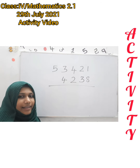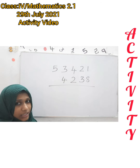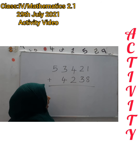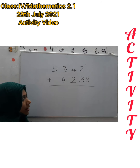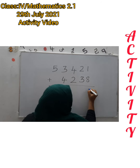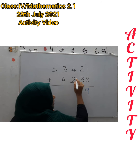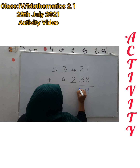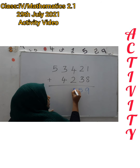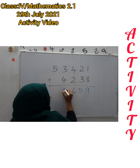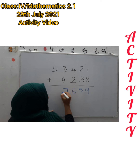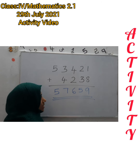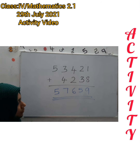From where should we start? From the 1's place. 8 plus 1 is 9. Then 3 plus 2 is 5. 4 plus 2 is 6. 4 plus 3 is 7. And 5 remains, so the answer is 57,659.